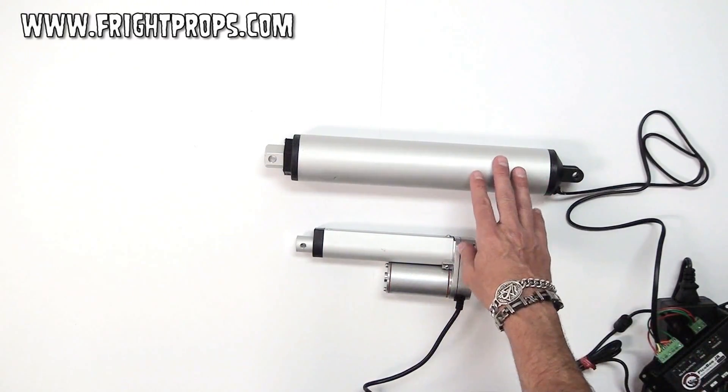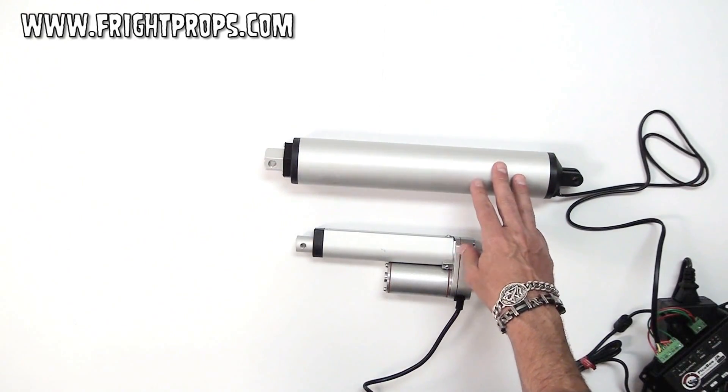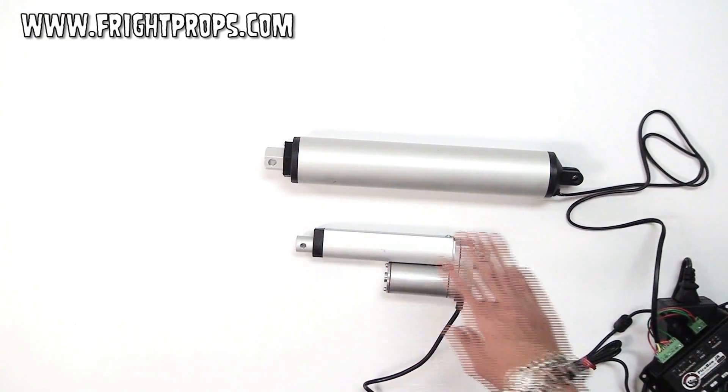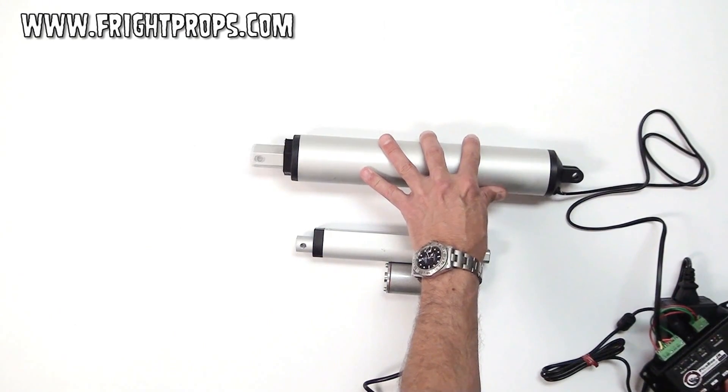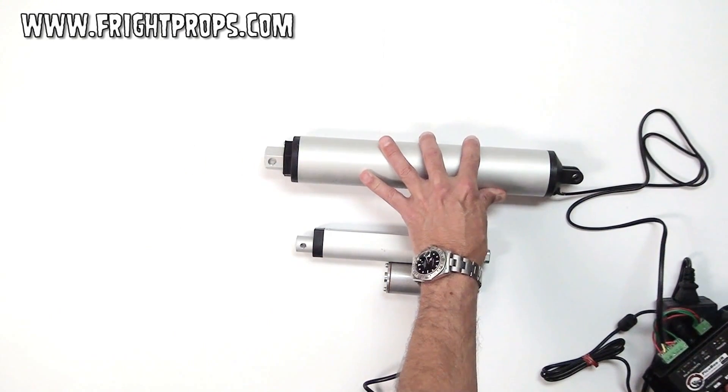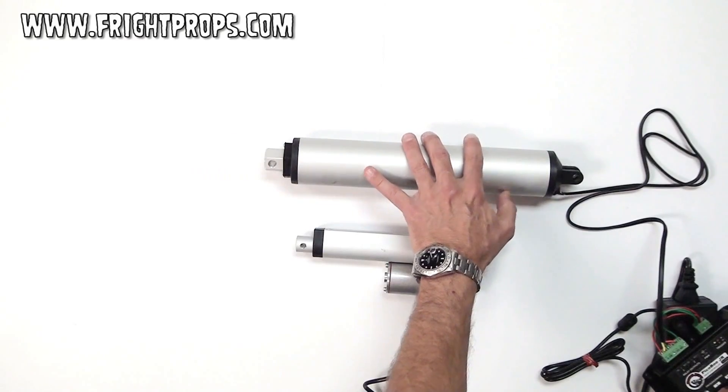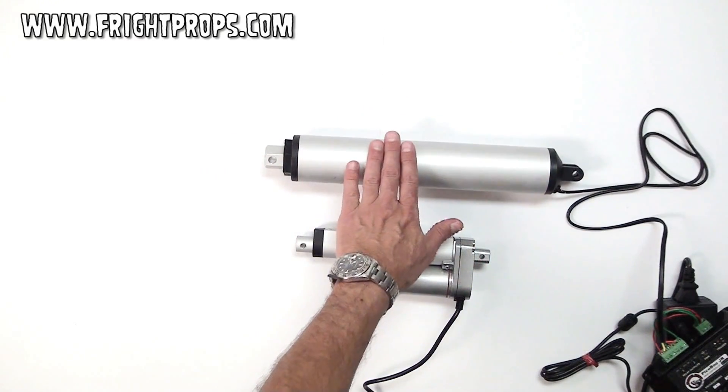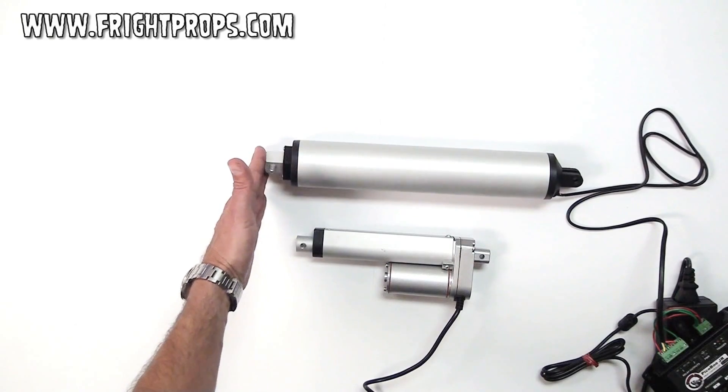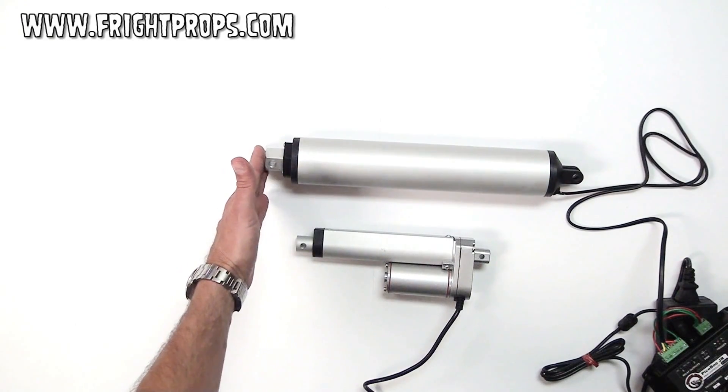The high speed has a force of twenty-two pounds and moves the shaft nine inches per second. As you can see, the high speed is much faster, but you're not going to be able to lift as much force or push as much force.